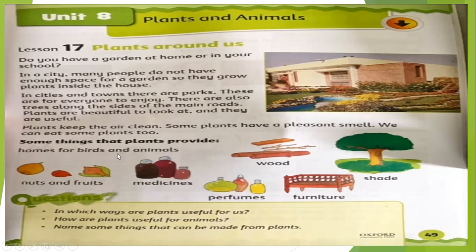Plants provide homes for birds — birds live in different trees and plants, make their nests there, and live there. When we cut trees we take the wood, which is used in making furniture and also in making doors and windows of houses. We can sit under shady trees and enjoy the weather. Medicines also come from plants — mostly medicines come from plants — and perfumes come from flowers. Most furniture is made of wood.